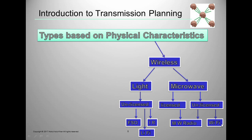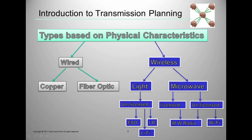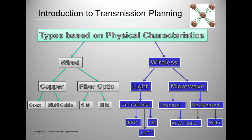Microwave radios typically use frequencies like 7 GHz or 13 GHz. In the wired category we have copper and optical fiber. In copper, we have coaxial cable — a single center conductor used widely in TV — and also multi-pair Ethernet cables with 4, 10, or 100 pairs used to transport data. In optical fiber there are two kinds: single mode and multi mode.